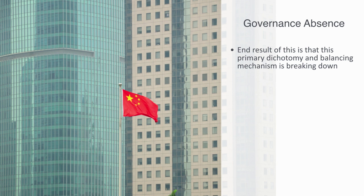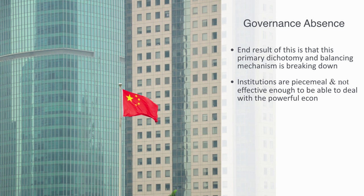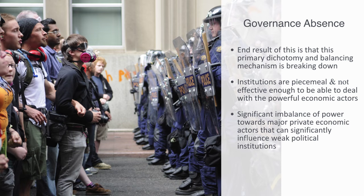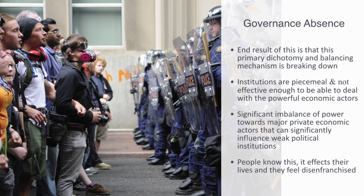As Dani Rodrik noted, social governance remains by and large mostly national. We have global institutions, but they don't properly integrate and coordinate to deal with the powerful economic actors at play. There is currently no real form of democratic social regulation of our economy on the global level — just a significant imbalance of power toward major private actors that have the capacity to influence and manipulate weak political institutions. People know this, it affects their lives, and they feel disenfranchised — expressed at best in mass cynicism and resentment toward multinational corporations, and at worst through violent protests at economic summits.